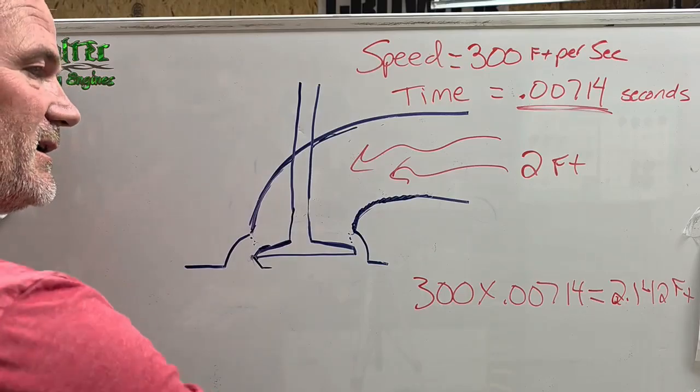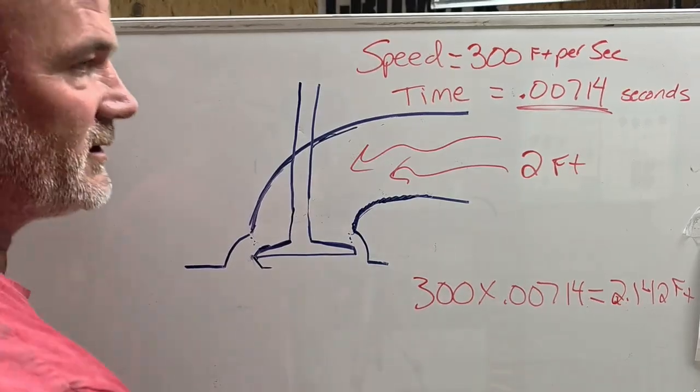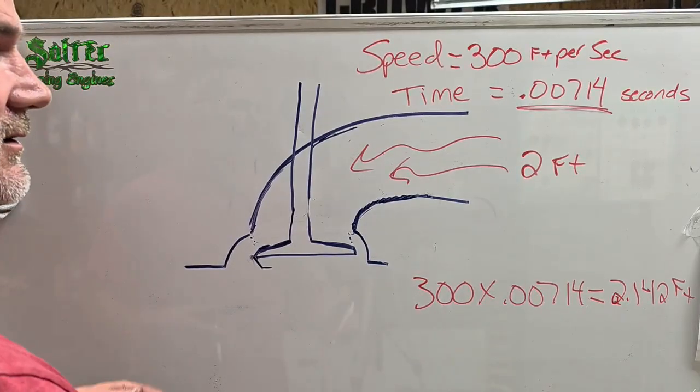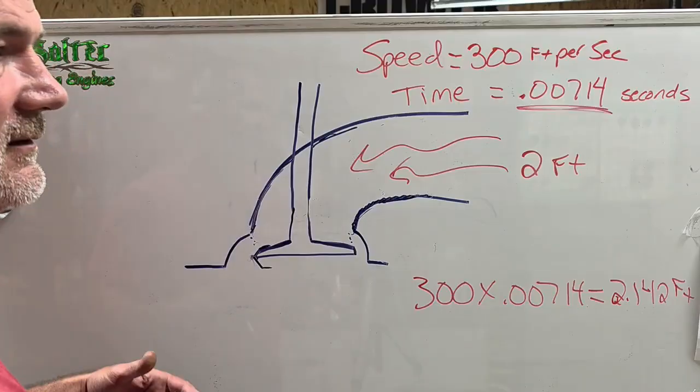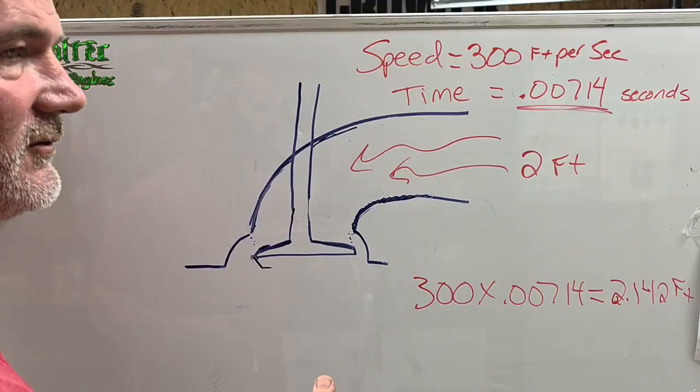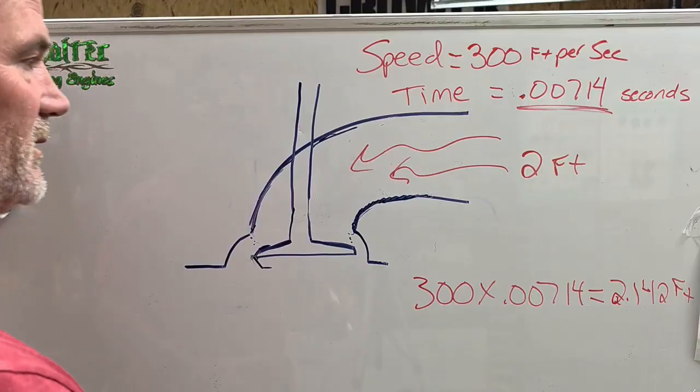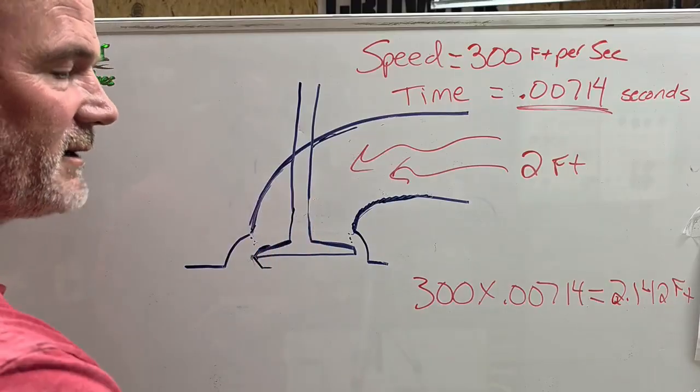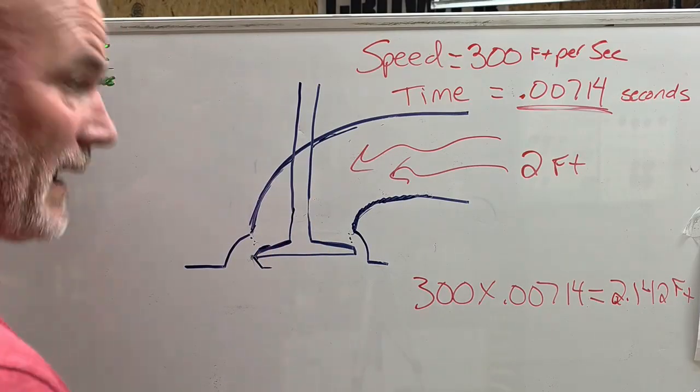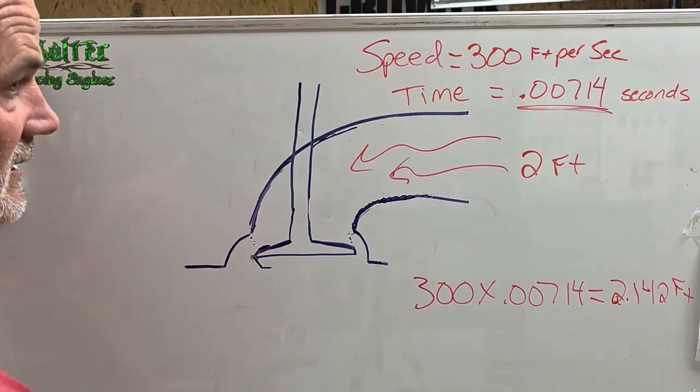And any time you make a blanket statement that a large port that flows a lot is better than a small port that flows a lot, that is for your application. If you put a large port on a circle track motor, you're going to get waxed. Trust me.